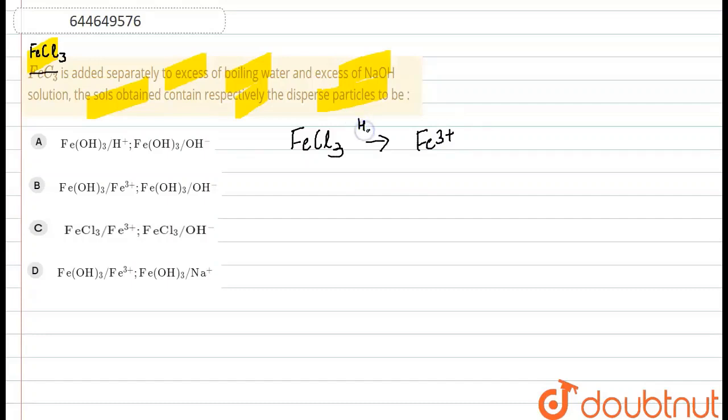...it produces a positively charged solution. Now when FeCl3, in the second case, is added to excess of NaOH solution. So when we add it to NaOH solution...